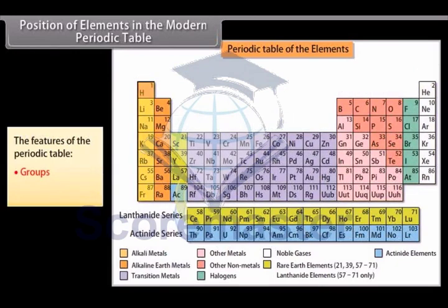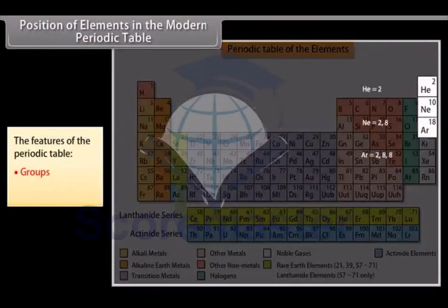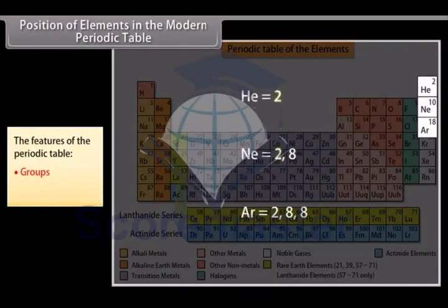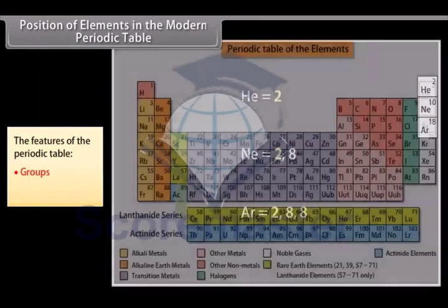Groups. The Periodic Table has 18 columns. These columns are called groups. The extreme left elements of the group contain alkali elements and the extreme right elements contain noble gases. All elements in the group have similar electronic configurations and have the same number of valence electrons.